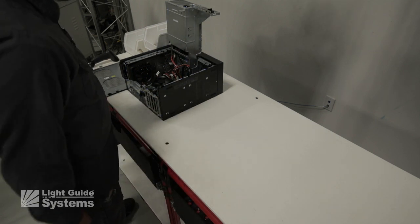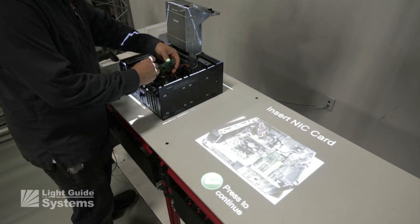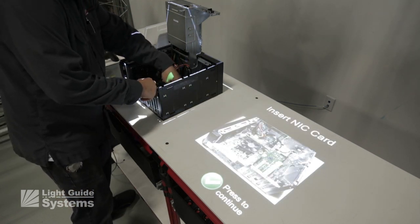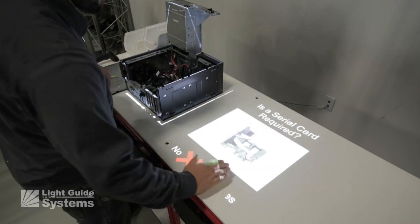Light Guide prompts again with configuration questions, and the technician continues to the NIC card installation step. The NIC card location is indicated and flashing on both the picture of the machine and the machine itself.